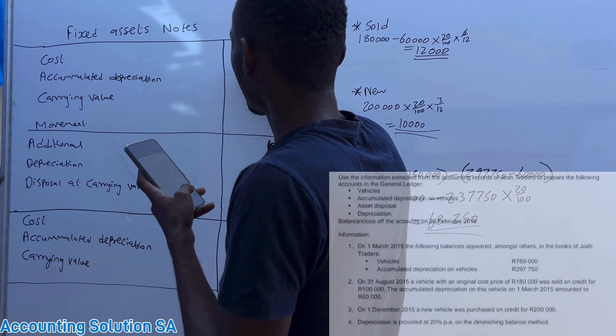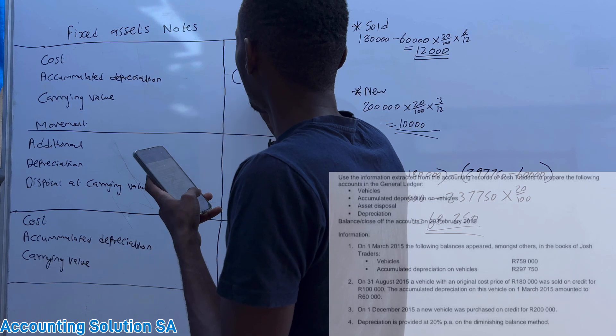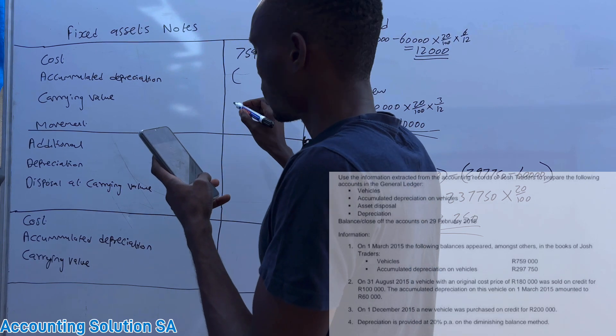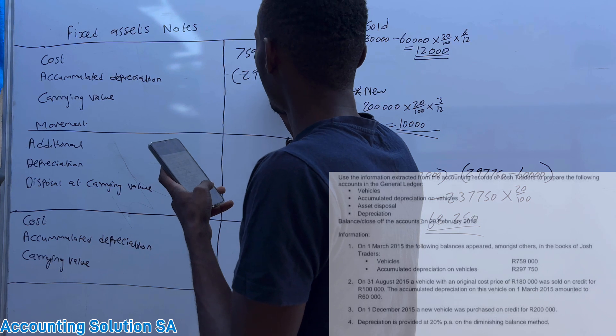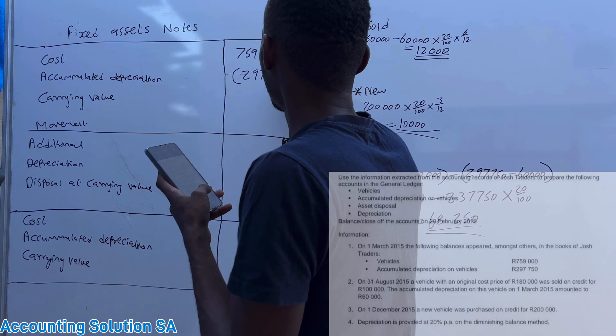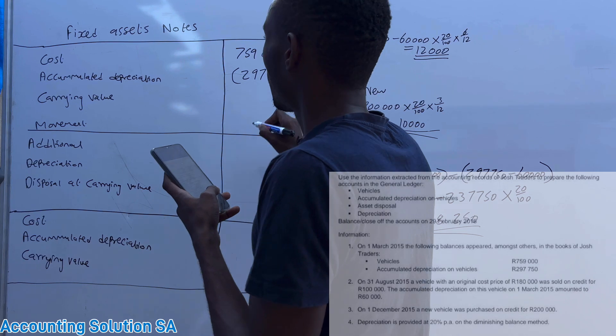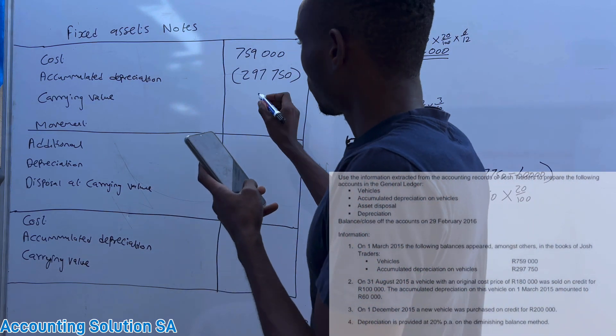Opening balance is 759,000 and then accumulated depreciation is 297,750. The carrying value is going to be 461,250.